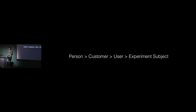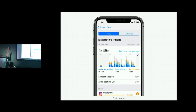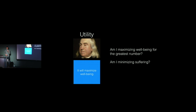As a designer, we have to help the company keep the human's goals at the center. An example of this is Apple's screen time feature, where they allow users to see how much time they spent on their device — the idea being for people to spend more time on their own goals, even if it means less time on Apple's goal. On to the second ethical evaluation, called utility. During your design process, you can evaluate with this question: am I maximizing well-being for the greatest number of people?